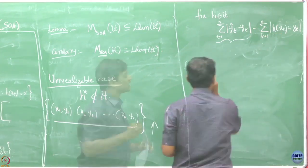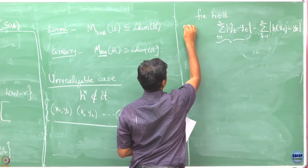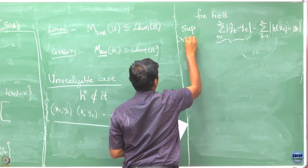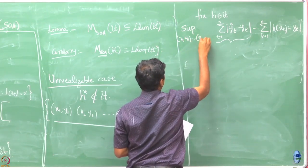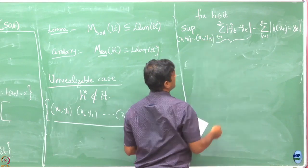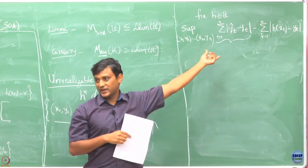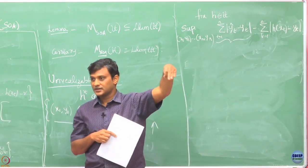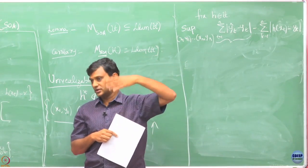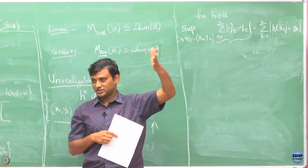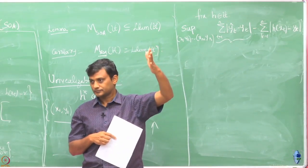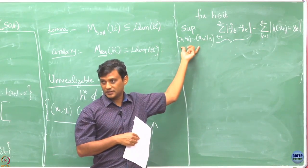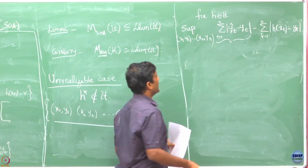Now, I will take the worst case — I do not want to be dependent on a particular sequence. I want this guarantee for all possible sequences. That is why I am taking the supremum over all sequences.